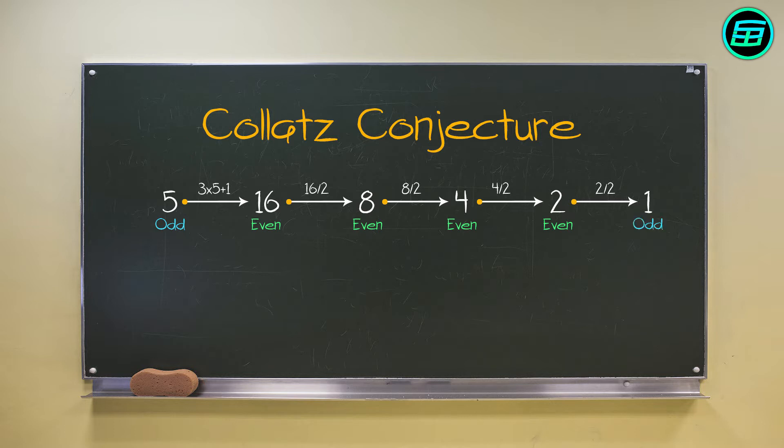1 is odd, so now we multiply by 3 and add 1, which gives 4. So we find ourselves in an infinite loop, just repeating 4-2-1, 4-2-1, 4-2-1.